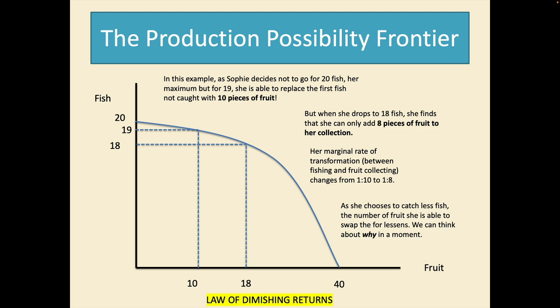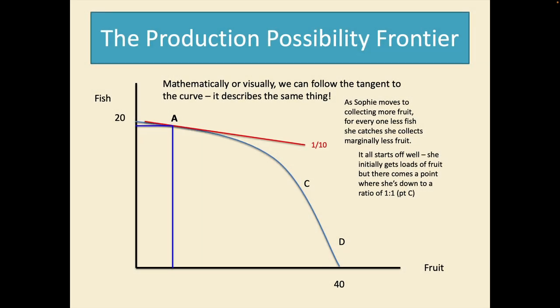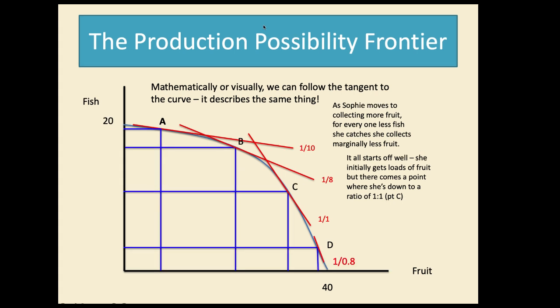Now mathematically or visually if you don't like math so much we can follow the tangent to the curve. It's describing the same thing. So as Sophie moves to collecting more fruit for every one less fish she's catching marginally less fruit at each move. It starts off well. She initially gets loads of fruit but there comes a point where she's down to a ratio of 1 to 1 at point C. One less fish, one extra piece of fruit. Then she drops to point D. So one less fish she's going to catch means she only gets 0.8 of a fruit whatever that looks like.